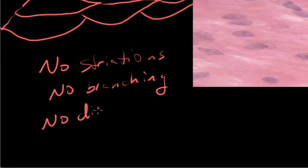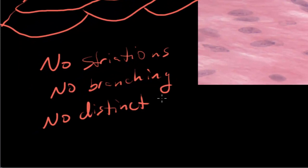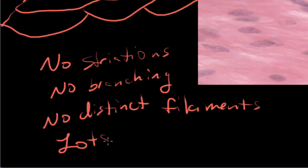And again we see lots of nuclei here which we don't see in cardiac muscle. So we don't see any striations, we don't see any branching, there's no striations, there's no branching, there are no distinct filaments, lots of nuclei. So that tells me that this is smooth muscle.